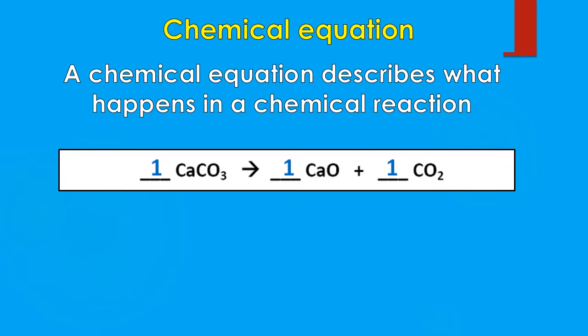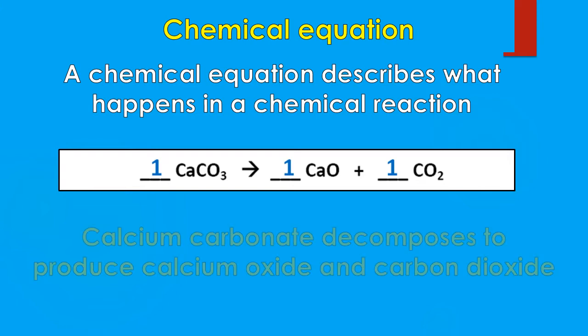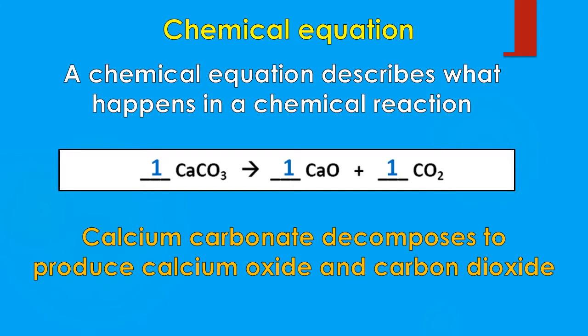It can be written in equation form as we have it, or it can also be written in word form. What it tells us is that calcium carbonate decomposes to produce calcium oxide and carbon dioxide.